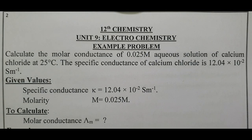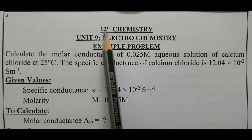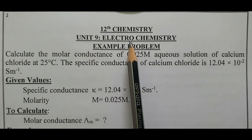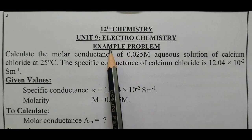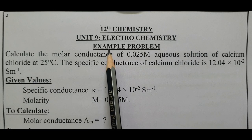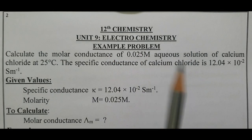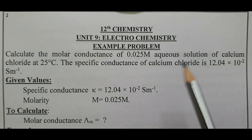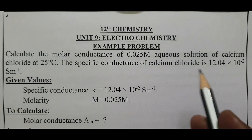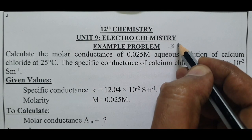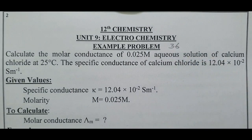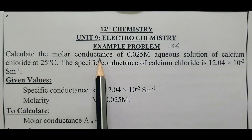Peace be upon you and your family. 12th chemistry, unit 9: electrochemistry. In this we are going to discuss about an example problem in our English medium book, second volume. The problem is present in page number 36.